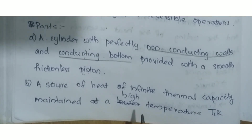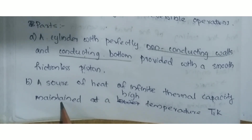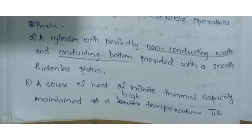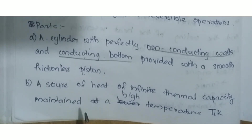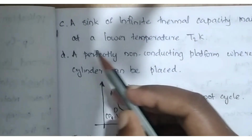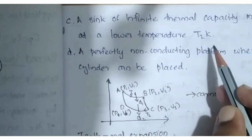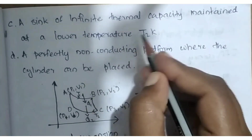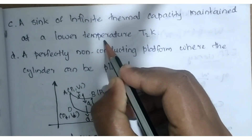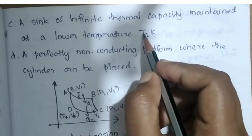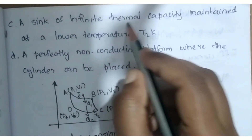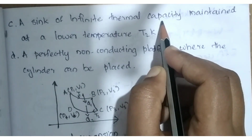T1K is the source of infinite thermal capacity. There is also a sink of infinite thermal capacity maintained at lower temperature T2K.